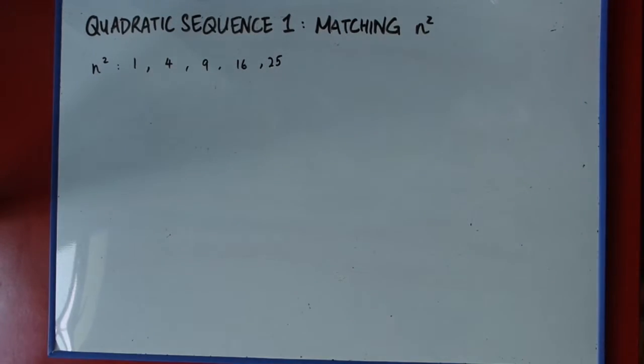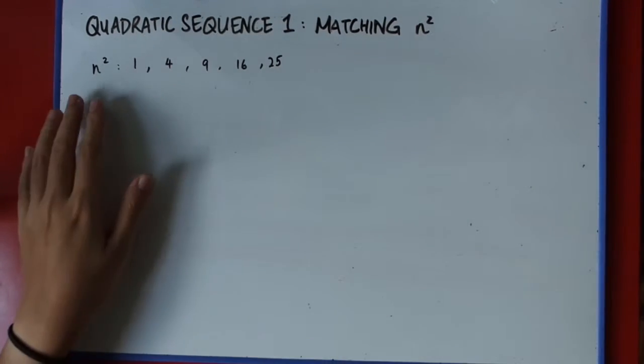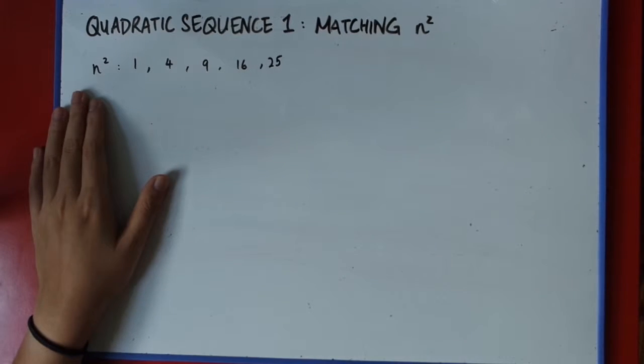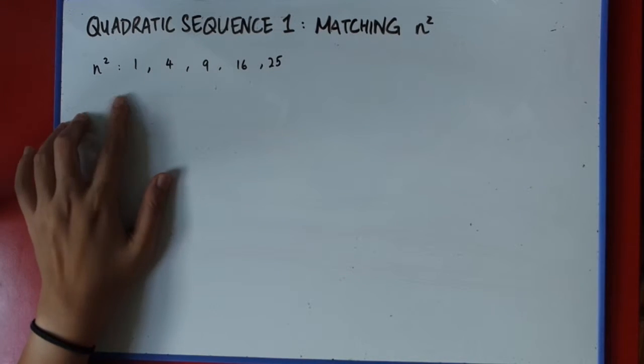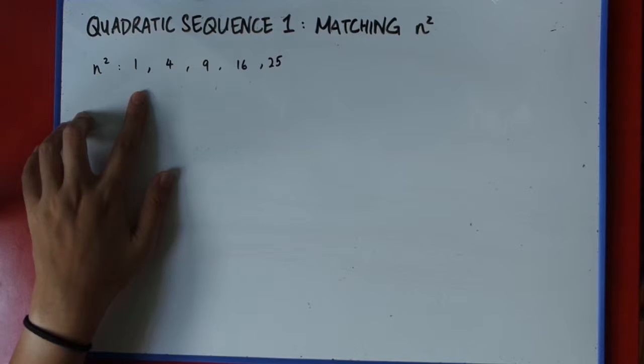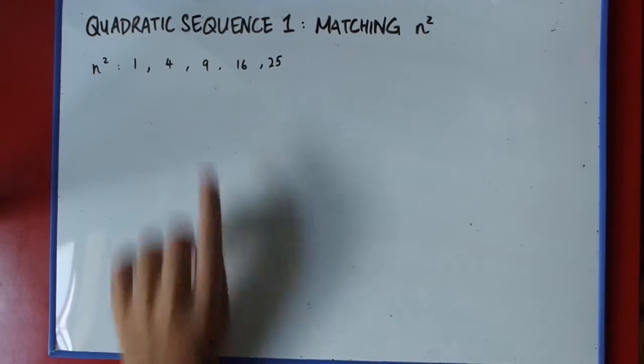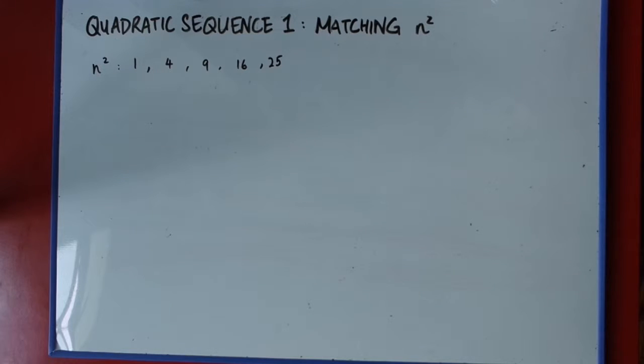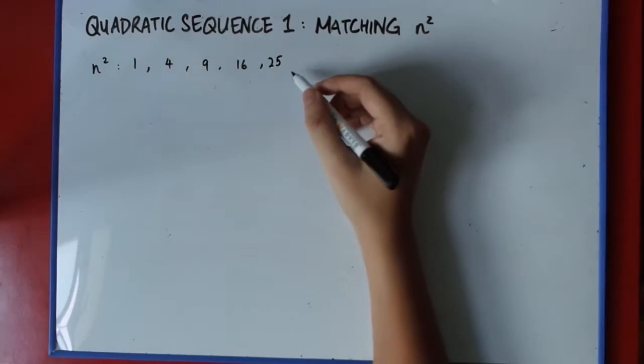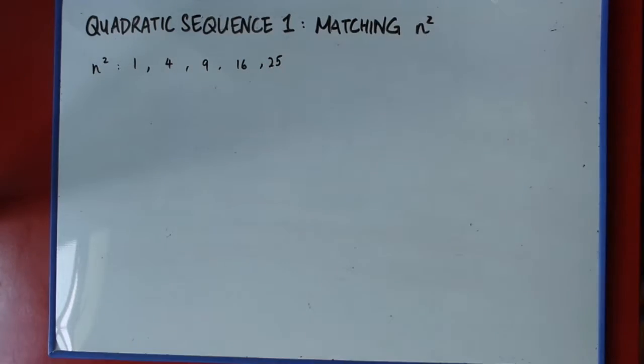I kind of found this out on my own, so I don't really have a good name for it. For now, I'll just call it matching n-square because that's what we are kind of trying to do. So first let's take a look at n-square. This is the most natural quadratic sequence, if you will.